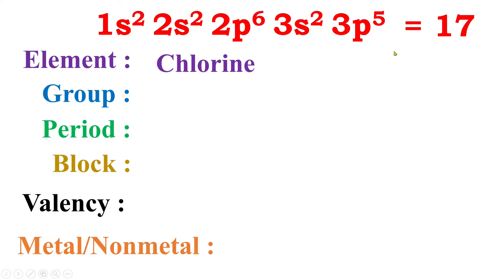Now how can we declare the group of this element? We have to identify it with the help of this electronic configuration. If you are asked to write with reason, you have to give the reason also. Look at this — its outermost orbit is the third orbit or third shell. The first shell contains the first number, the second shell contains the second, and the third shell contains the third. The third shell contains 5 plus 2, total 7 electrons.